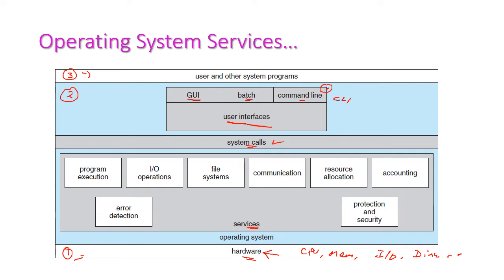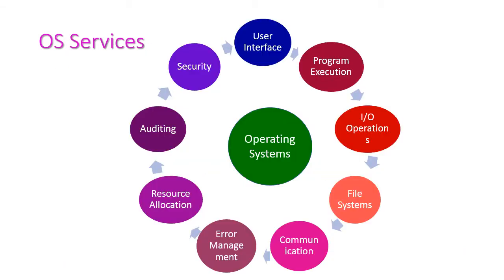The services we will now see one by one are: program execution, IO operations, file system, communication, resource allocation, accounting, error detection, and protection and security. Today we will see all these services in brief.